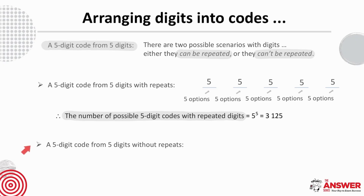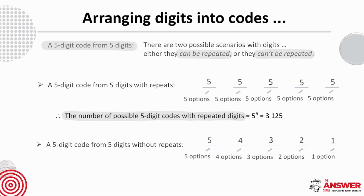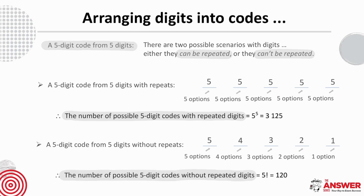Now let's consider a five-digit code from five digits without repeats. There are five options for the first slot. Then because no repeats are allowed, there are four options for the second slot, then three, then two, then one. The number of possible five-digit codes without repeated digits is 5 factorial, which is 120.